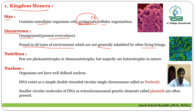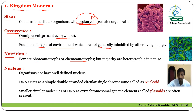It is about the occurrence. Now regarding nutrition — how they survive. Some organisms from Kingdom Monera are photo autotrophs or chemo autotrophs. Photo autotrophs can prepare their own food material using light energy.